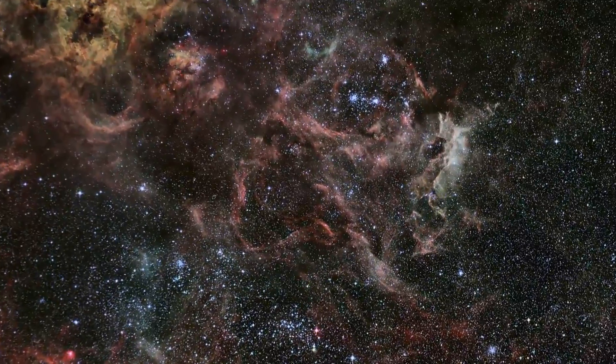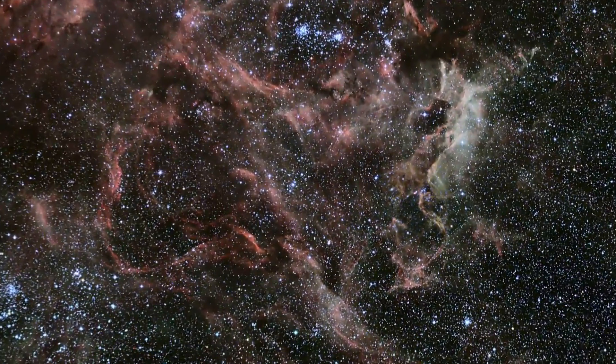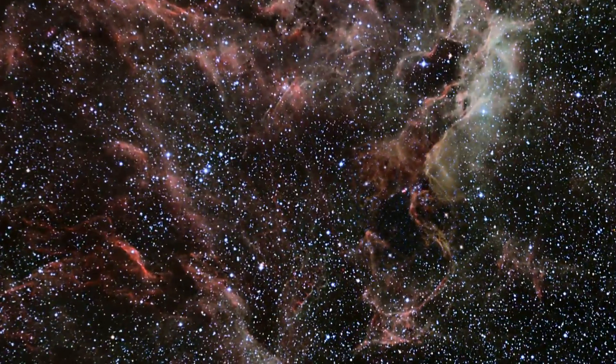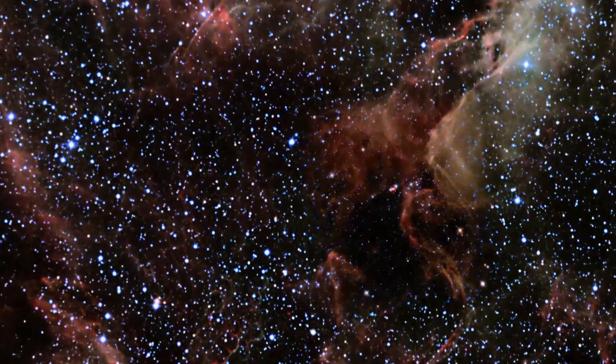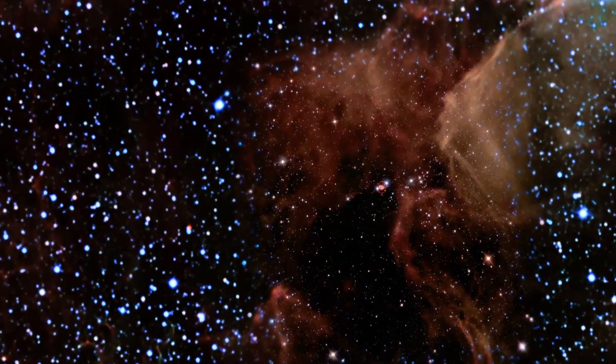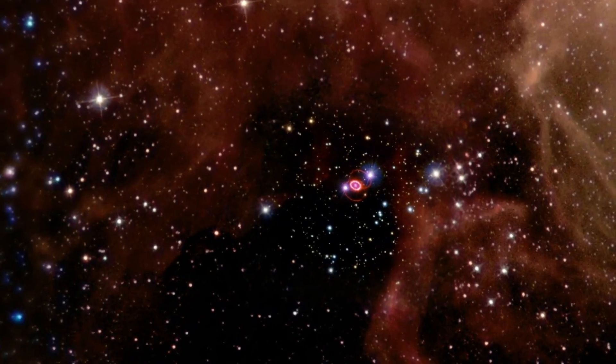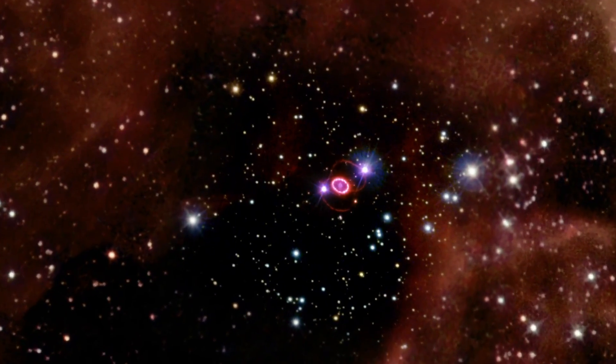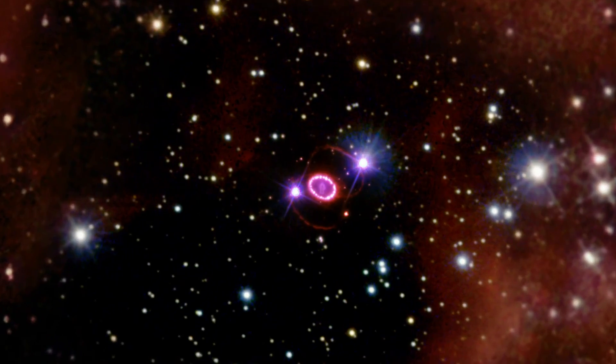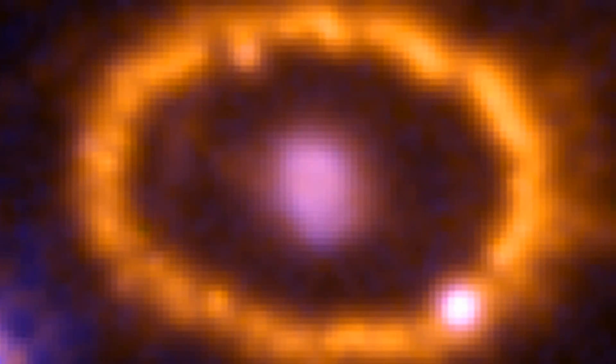The most famous supernova that Hubble has directly observed came with the death of a giant star in the Large Magellanic Cloud. The light from the initial blast first reached Earth in 1987, a few years before Hubble's launch. But Hubble's images of the evolving supernova over the quarter of a century since then have become the gold standard for understanding this event.